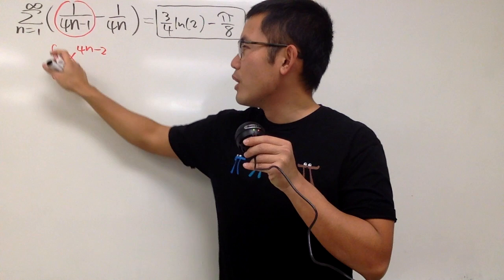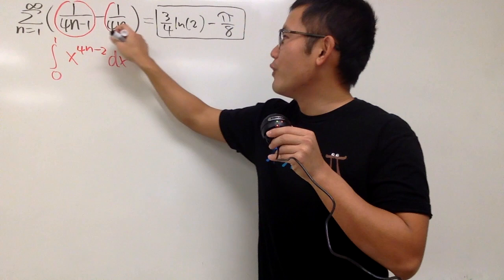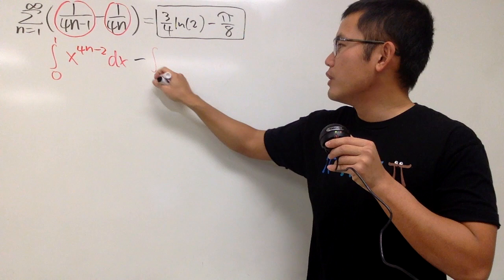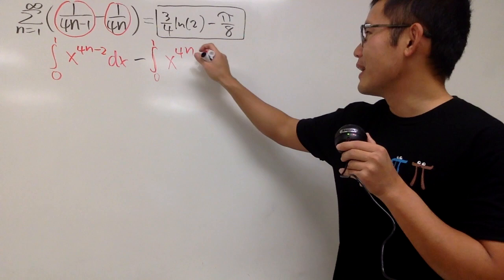Then we are going to do the same thing for the second one, which is 1 over 4n. And that's a minus in between. So we have minus an integral from 0 to 1. For this situation, we will integrate x to the 4n minus 1. Because if you add 1 to the power, you actually just have 4n, and then divided by the 4n, so you end up with that. dx. Good.